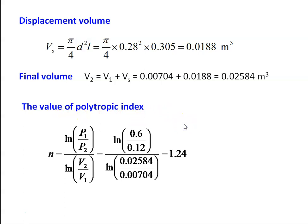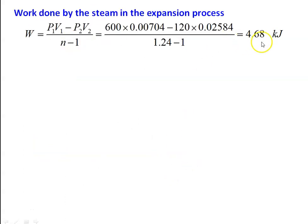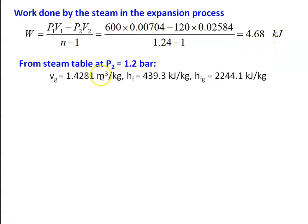Polytropic index: n equal to log of P1 by P2 divided by log of V2 by V1, substituting log of 0.6 divided by 0.12 divided by log of 0.02584 divided by 0.00704 equal to 1.24. Work done: W equal to P1V1 minus P2V2 divided by n minus 1, substituting 600 into 0.00704 minus 120 into 0.02584 divided by 0.24 equal to 4.68 kilojoules. From the steam table at 1.2 bar: Vg equal to 1.4283 meter cube per kilogram, Hf equal to 439.3 kilojoules per kilogram, Hfg equal to 2244.1 kilojoules per kilogram.